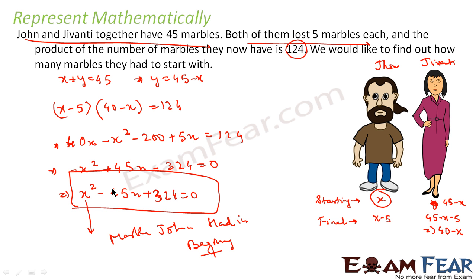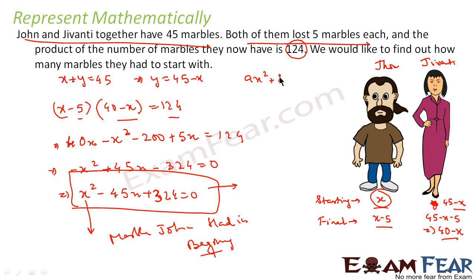To recap: John and Jivanti together had 45 marbles — John had x, Jivanti had 45 - x. Both lost 5 marbles, so John had x - 5 and Jivanti had 40 - x. Since the product is 124, we write (x - 5)(40 - x) = 124, which simplifies to x² - 45x + 324 = 0. This is a quadratic equation of the form ax² + bx + c = 0, where a = 1, b = -45, and c = 324.